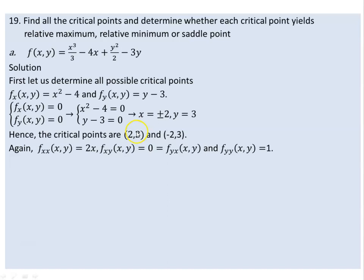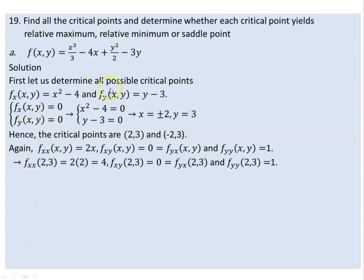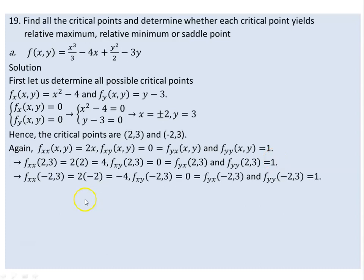The next task is plugging in both critical points. For point (2, 3): Fxx is constant, Fyy is constant, and Fxy is 0. We now use the discriminant expression D to determine the type of each critical point.